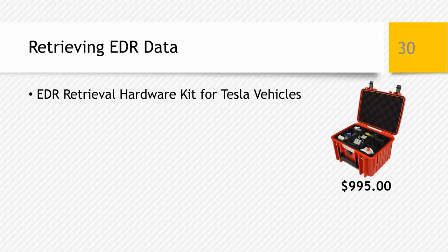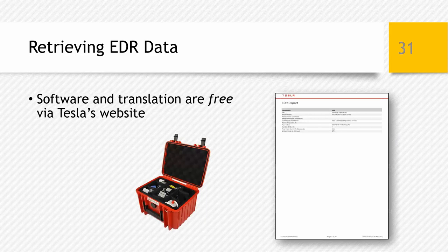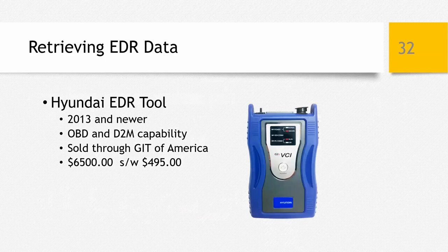Tesla EDR retrieval capability became available just last year. The hardware kit sells for $995, available through Crash Data Group, and contains all the hardware needed to download any Model S, Model X, or Model 3 Tesla — both in-vehicle or by connecting directly to the airbag control module. The software and translation services for Tesla are free of charge through Tesla's website. You download the EDR data file using the hardware kit, upload the file through Tesla's website, and an EDR report is generated as a PDF document.